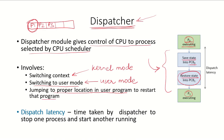All the time taken by the dispatcher to stop one process and start another running is referred to as dispatch latency. It is important that dispatch latency should be as minimum as possible so that the system can quickly switch from one process to another.